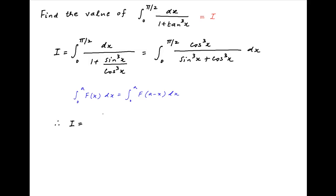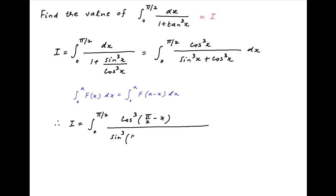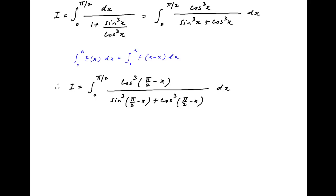Applying this property to the given integral, I can also be written as integral 0 to π/2, replacing x with π/2 minus x. The numerator becomes cos cube of (π/2 minus x) and the denominator is sin cube of (π/2 minus x) plus cos cube of (π/2 minus x). Now cos of (π/2 minus x) equals sin x and sin of (π/2 minus x) equals cos x.